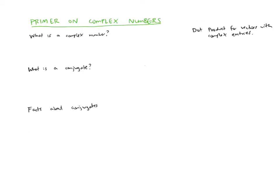A complex number is a number like 2 + 3i or 14.5 minus the square root of 7 times i, or any number of the form a + bi, where a and b are real numbers. Here i represents the square root of negative one — it's called an imaginary number because there's no real number whose square is negative one. In a complex number a + bi, the part a is called the real part.